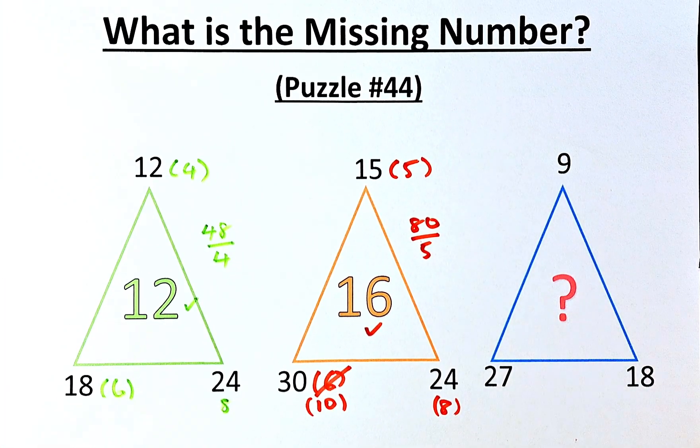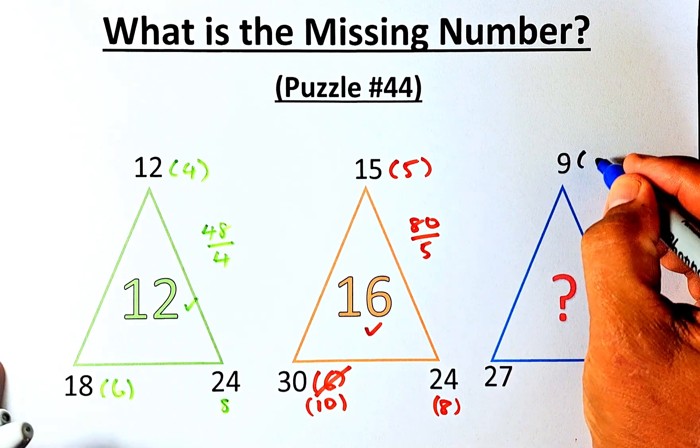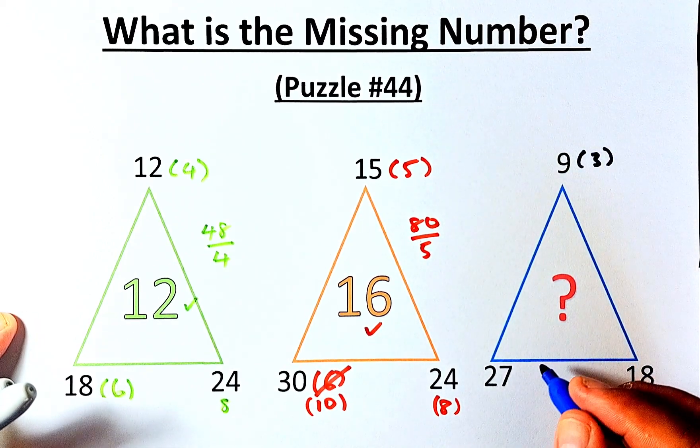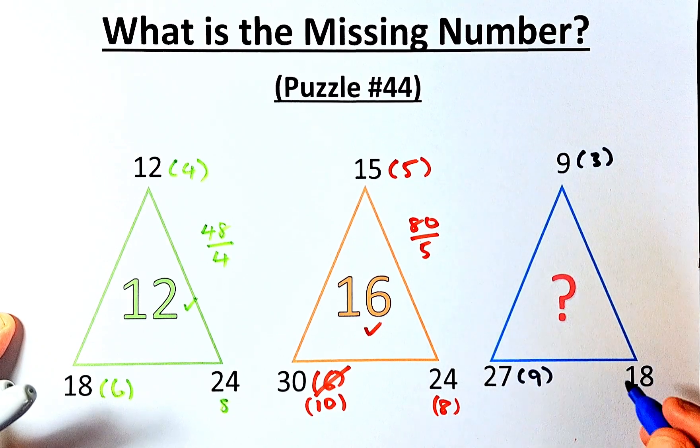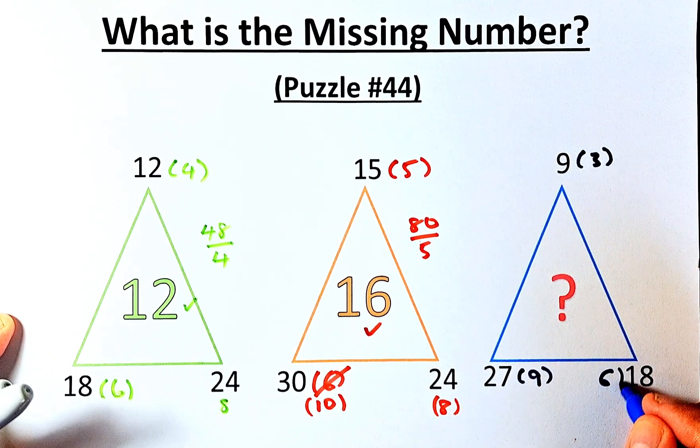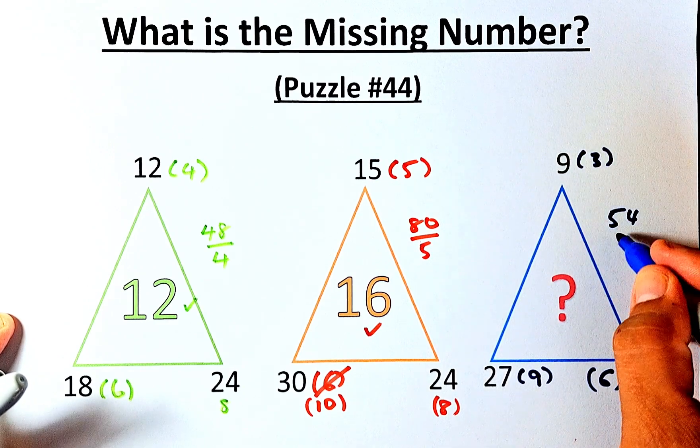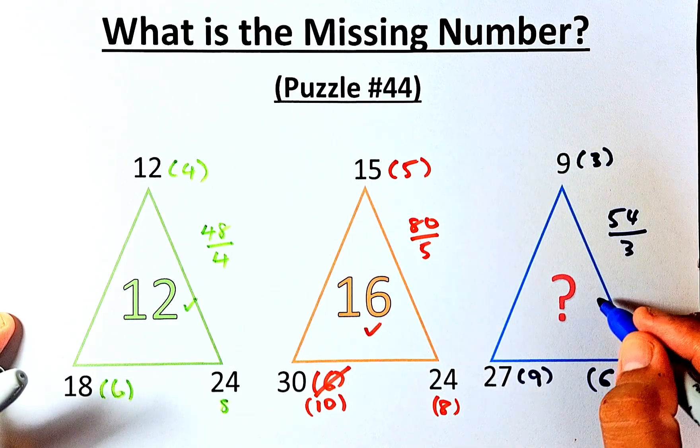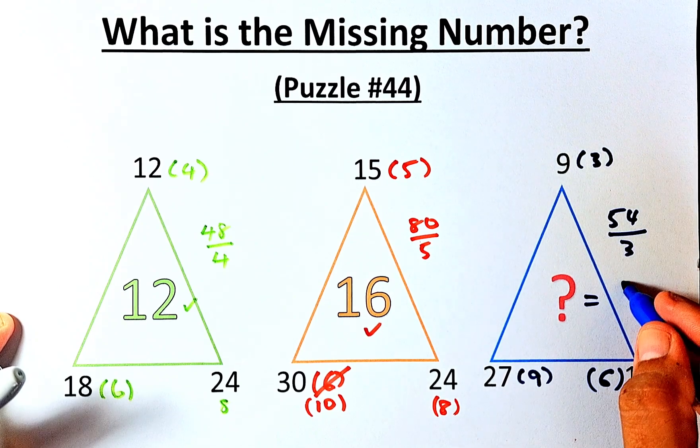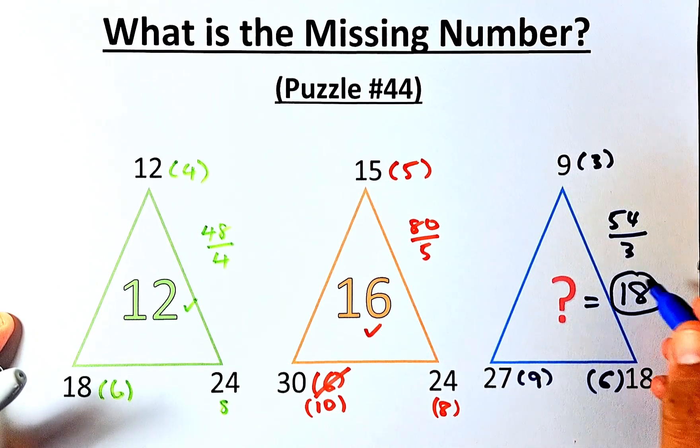Last but not least, the blue triangle. We have 9, 27, 18. Again, we're going to divide by 3. So 9 is 3, 27 is 9, and 18 is going to be 6. So now we're going to multiply 9 times 6 is 54 and divide by 3. The question mark is going to be 54 divided by 3, and that is equal to 18.